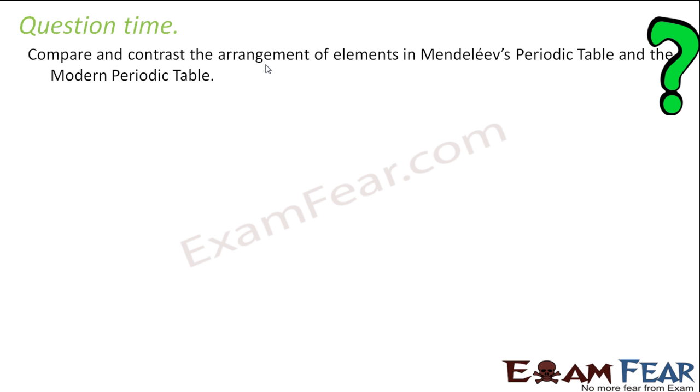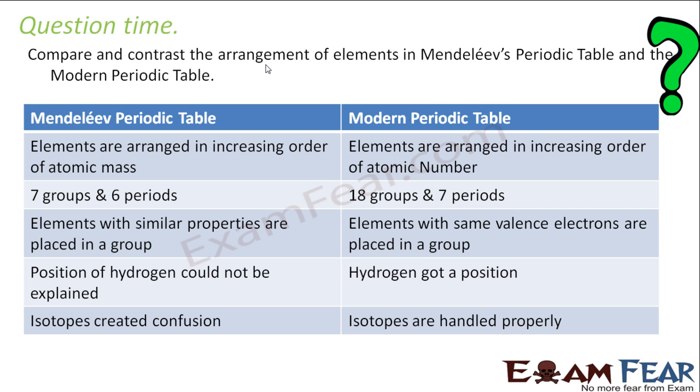We'll compare Mendeleev's and modern periodic table. If you see, here's the comparison. In this case, Mendeleev's one, elements arranged on the basis of atomic mass. Here, it is arranged on the basis of atomic number. There are seven groups and six periods only. There are 18 groups and seven periods. Elements with similar properties are placed in a group. And here elements with same valence electrons are placed in a group. Please note, there's a difference here. Position of hydrogen could not be explained in this case. Position of hydrogen is explained. There's isotope confusion here. There's no confusion of isotopes. That's the difference.